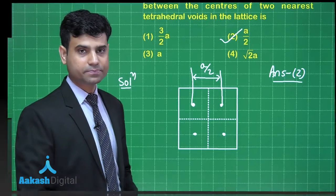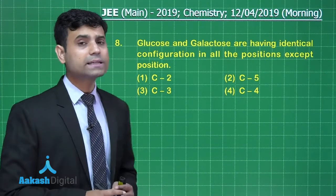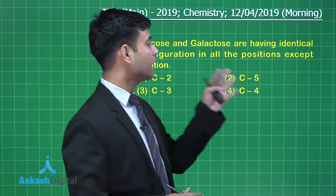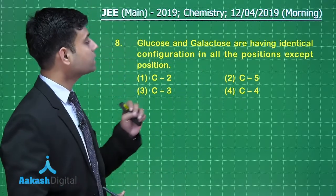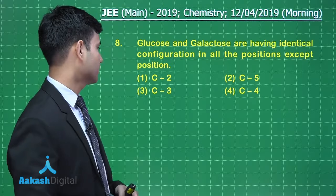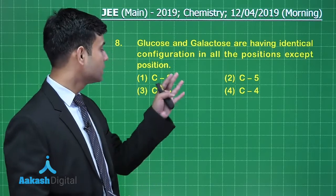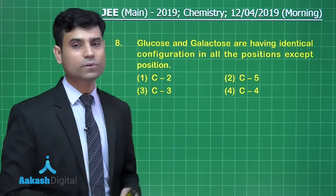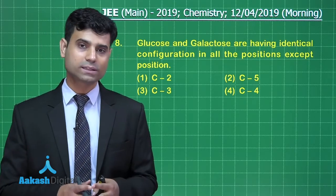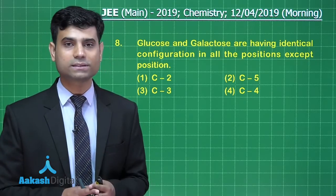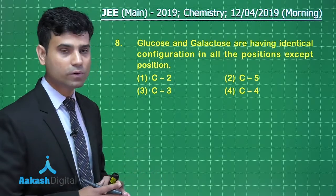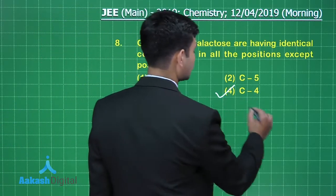The next question says: glucose and galactose are having identical configuration in all positions except position — options are C2, C5, C3, and C4. Glucose and galactose are C4 epimers, so the correct answer is option 4.